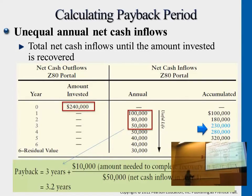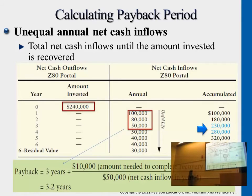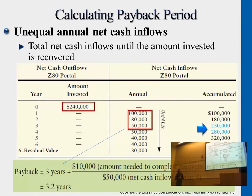What if the initial cost is $330,000? Then what would be the payback period? You find the two accumulated numbers closest to $330,000, which are the fourth year and the fifth year. You know for a fact that at least four years are needed, so the remaining part is $330,000 minus $320,000, divided by $40,000 — the fifth year's return. If the initial cost is $370,000, you pick the fifth and sixth years.